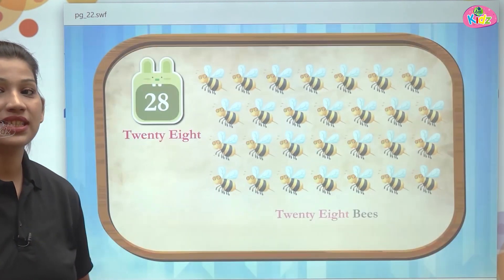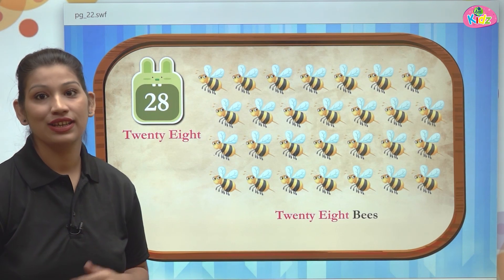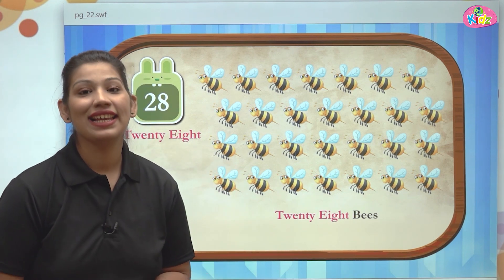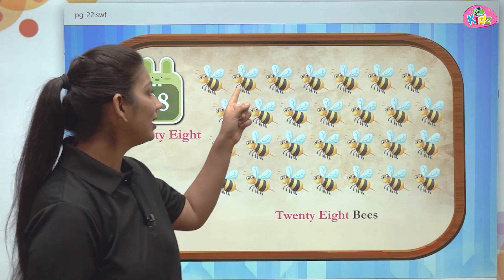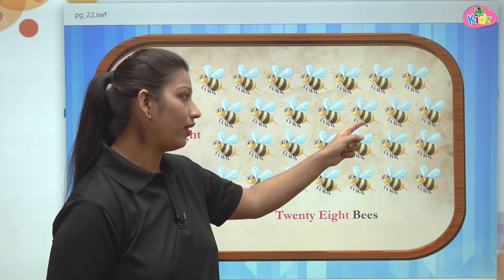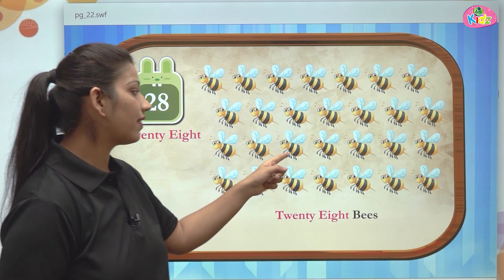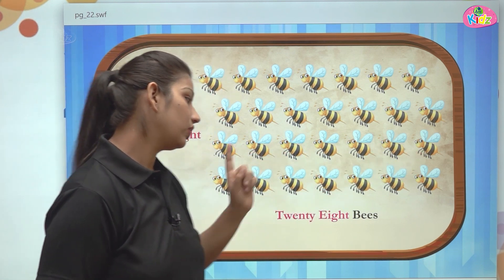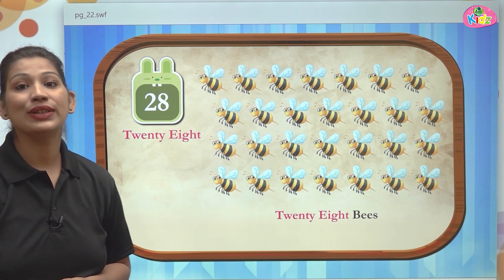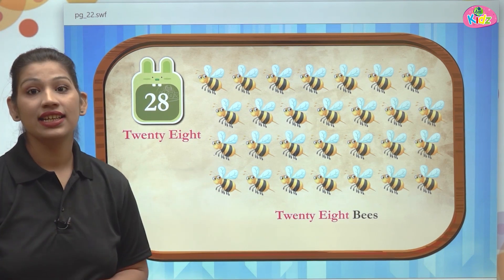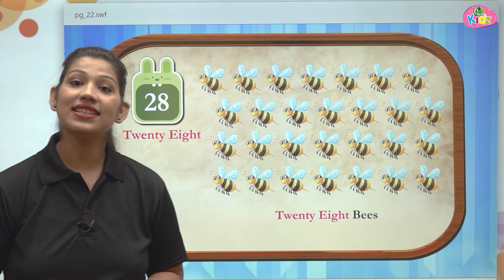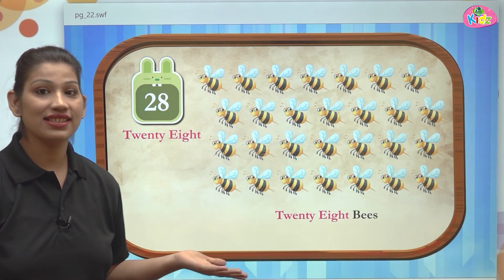After 27 what comes? This is number 28. Two, eight — 28. Here we can see bees. Let us count the number of bees — 1, 2, 3... all the way up to 27 and 28. There are 28 bees in total. T-W-E-N-T-Y is 20, E-I-G-H-T is 8. Twenty and 8 — this is the number 28.